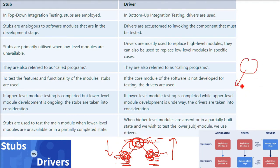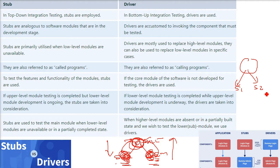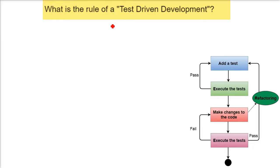To test the features and functionality of modules, stubs are used. If the core module of the software is not developed for any reason, drivers are used for testing. In summary: if the upper-level module is complete but lower-level modules are not, make stubs; otherwise, make a driver.